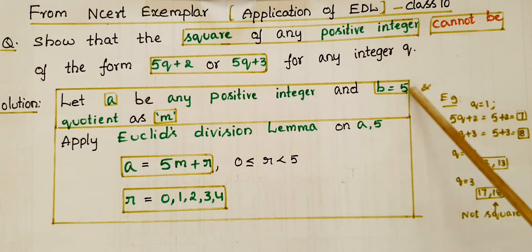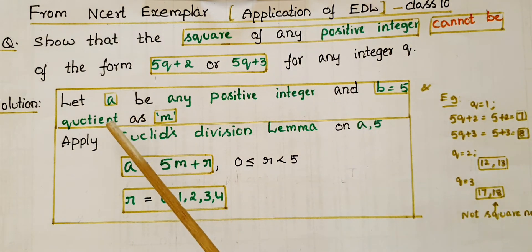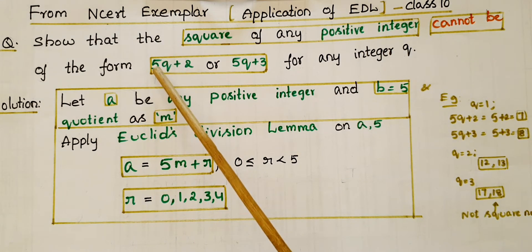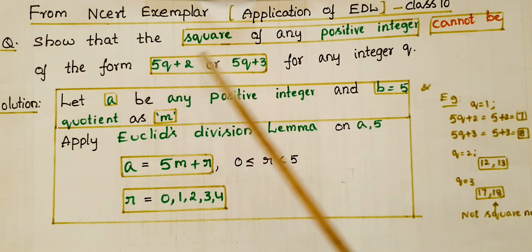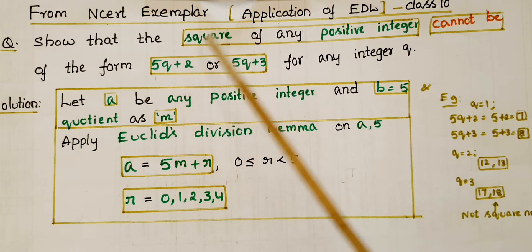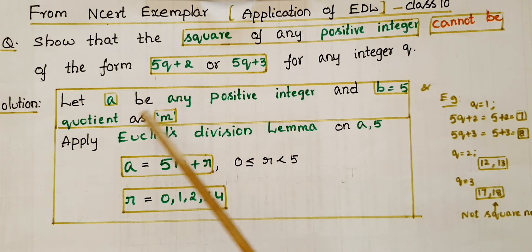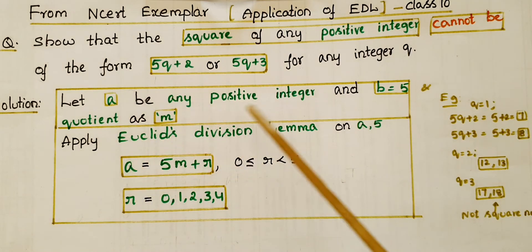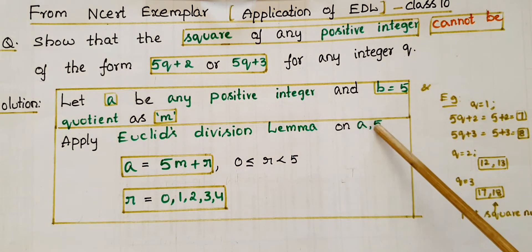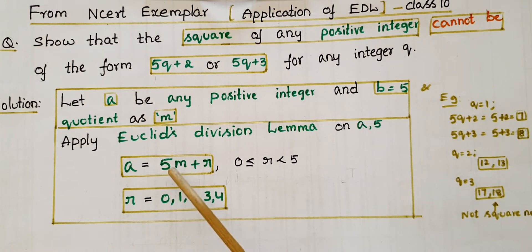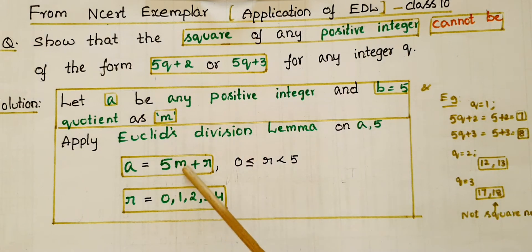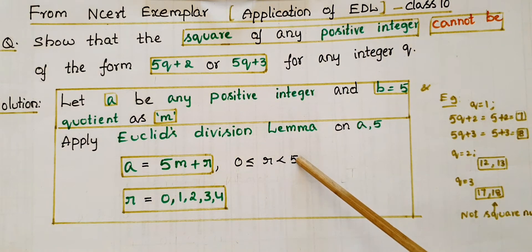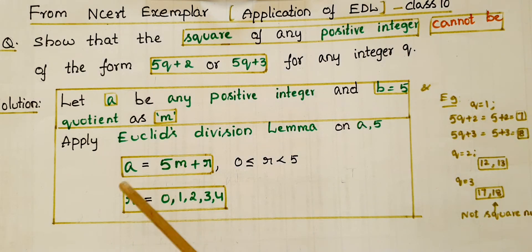Here b is equal to 5, and assume the quotient as m. We have to show that these terms are in the form of 5q plus 2 and 5q plus 3. Apply Euclid's division lemma on a and 5: a is equal to 5m plus r, where 0 is less than or equal to r, which is less than 5. So r is equal to 0, 1, 2, 3, or 4.